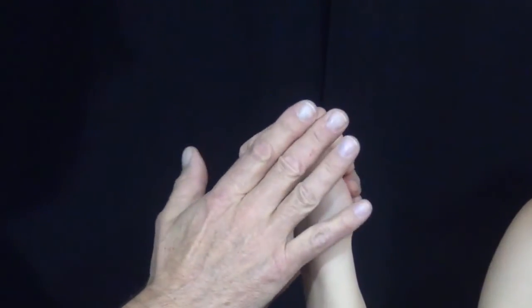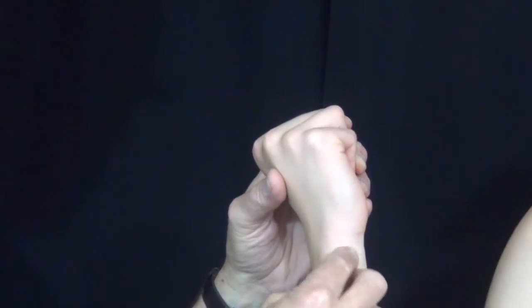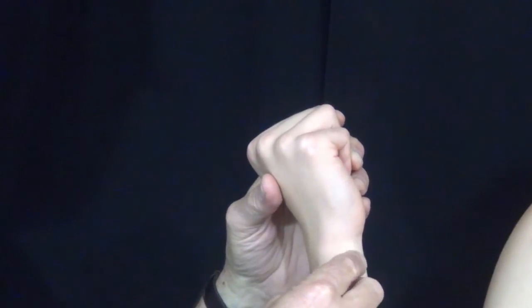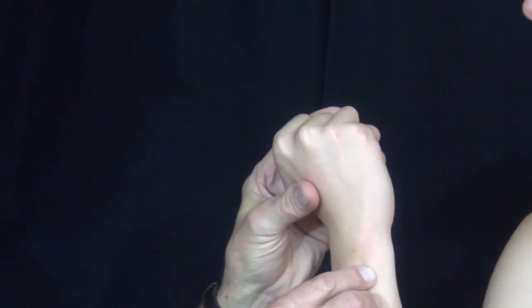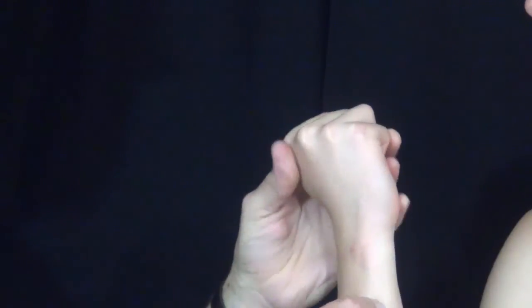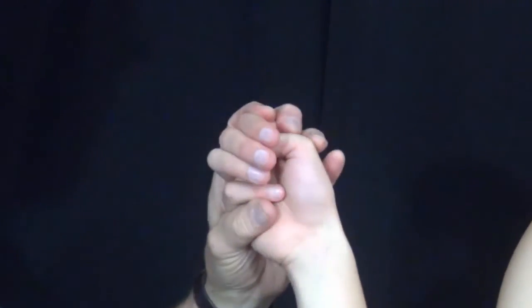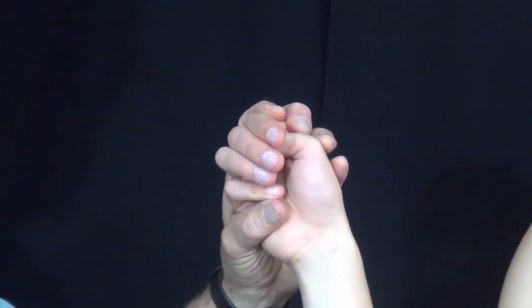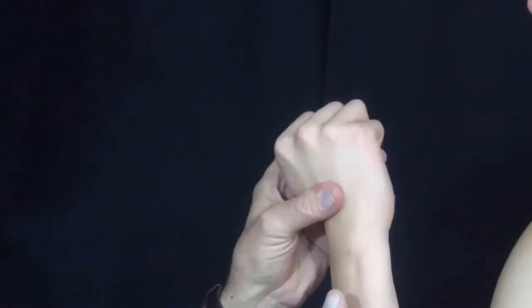The sixth compartment is the extensor carpi ulnaris tendon. It's a unique tendon in that it has two different functions. With the forearm in pronation, it is a marked ulnar deviator. With the forearm in supination, it is a wrist extensor.